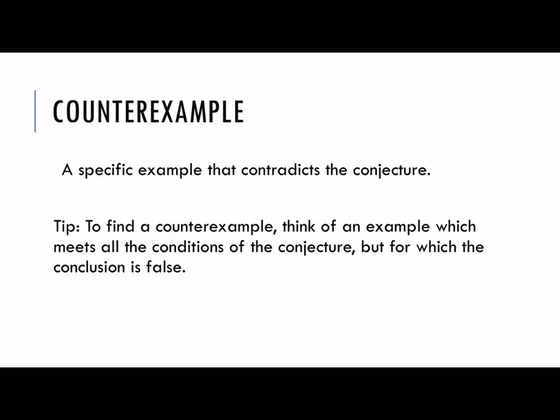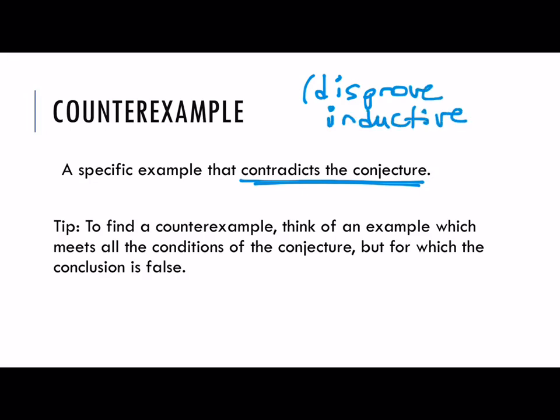So let's say we want to show that an inductive argument has come to a false conjecture — for example, the fish one we just looked at. The way to do this would be to come up with a counterexample. Counterexamples are used to contradict conjectures — basically they disprove inductive conclusions. So if we looked back at that fish example, a counterexample would require us to come up with one fish that is not orange, and that would show that not all fish are orange. What we need to do is think of an example that meets all of the conditions of the conjecture but for which the conclusion is false.